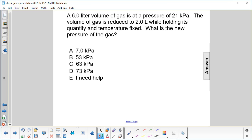A 6-liter volume of gas is at a pressure of 21 kilopascals, so we have pressure and volume. Probably going to lead us to Boyle's Law.